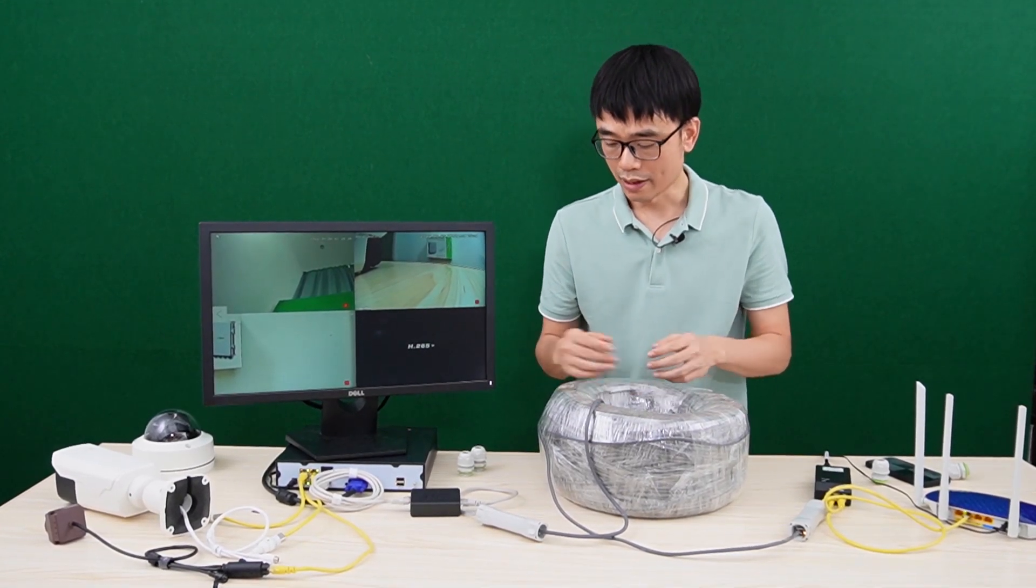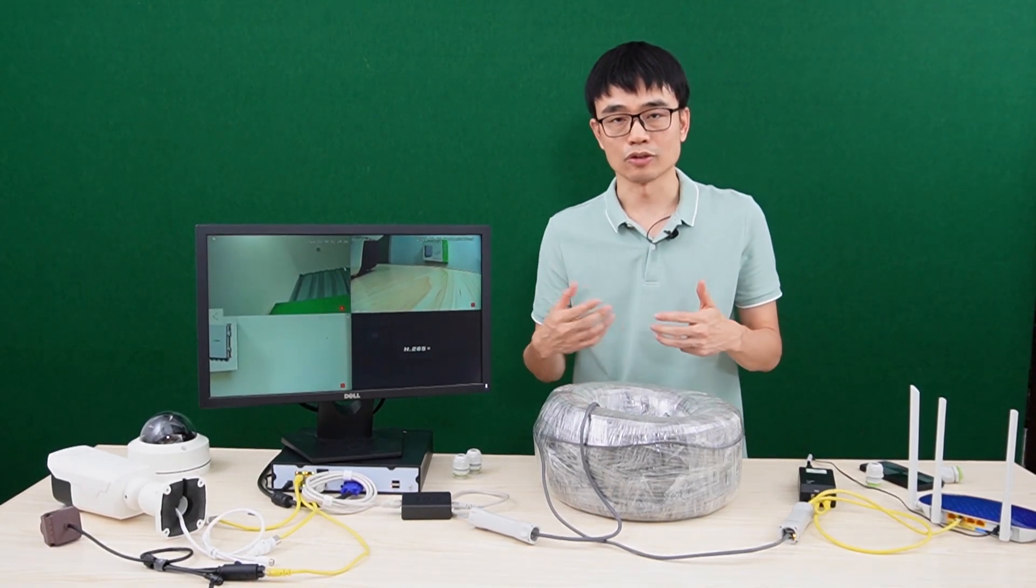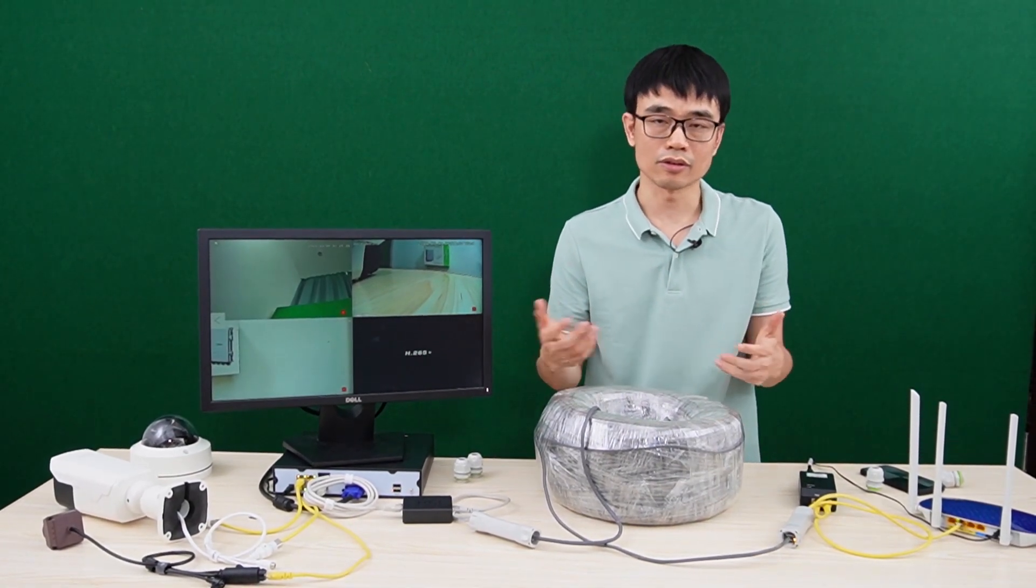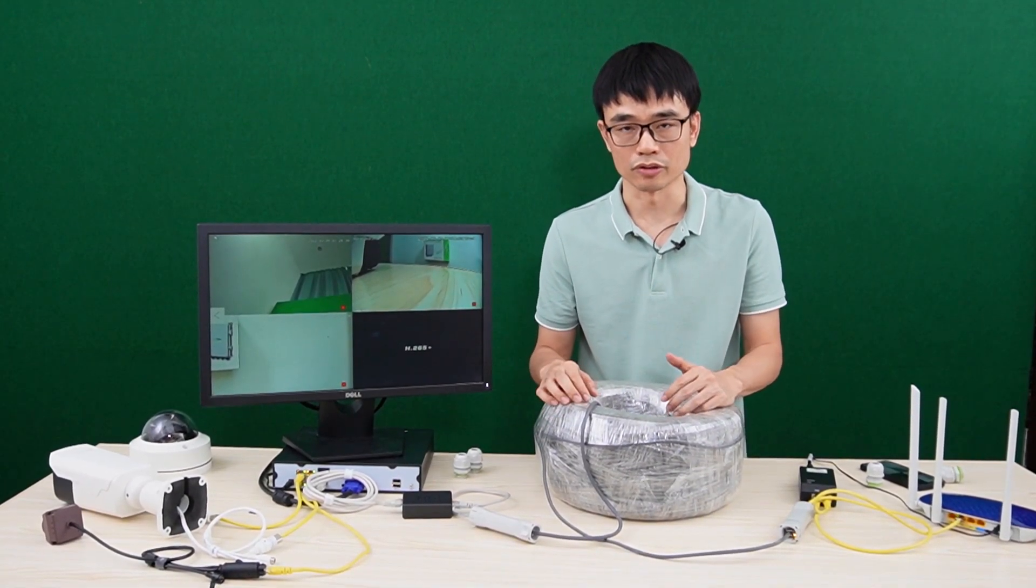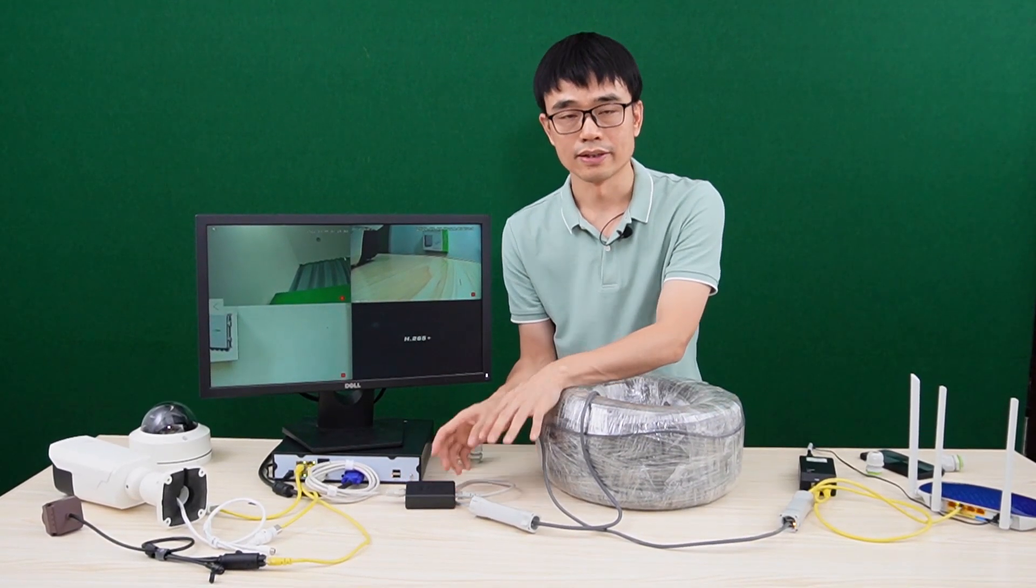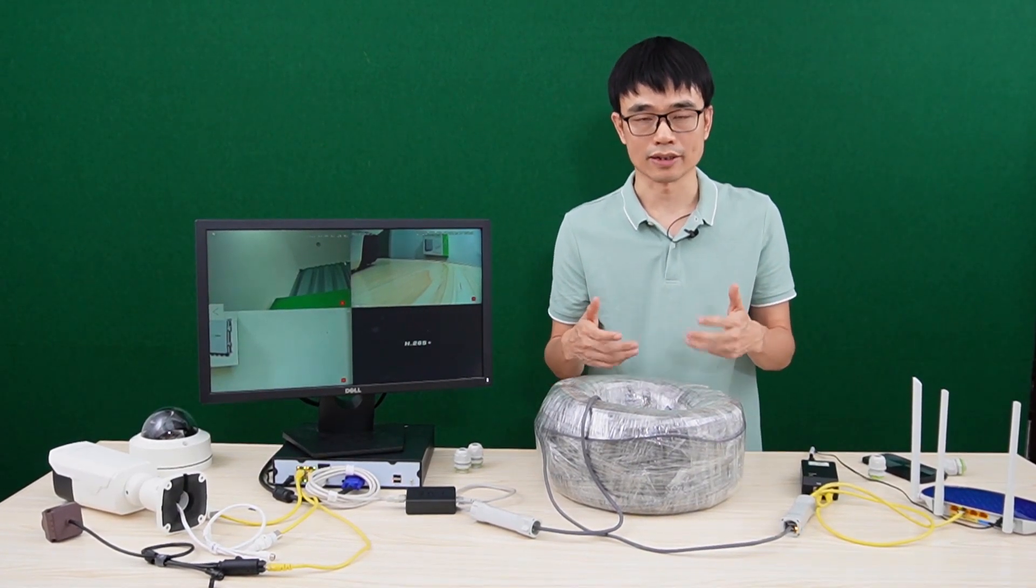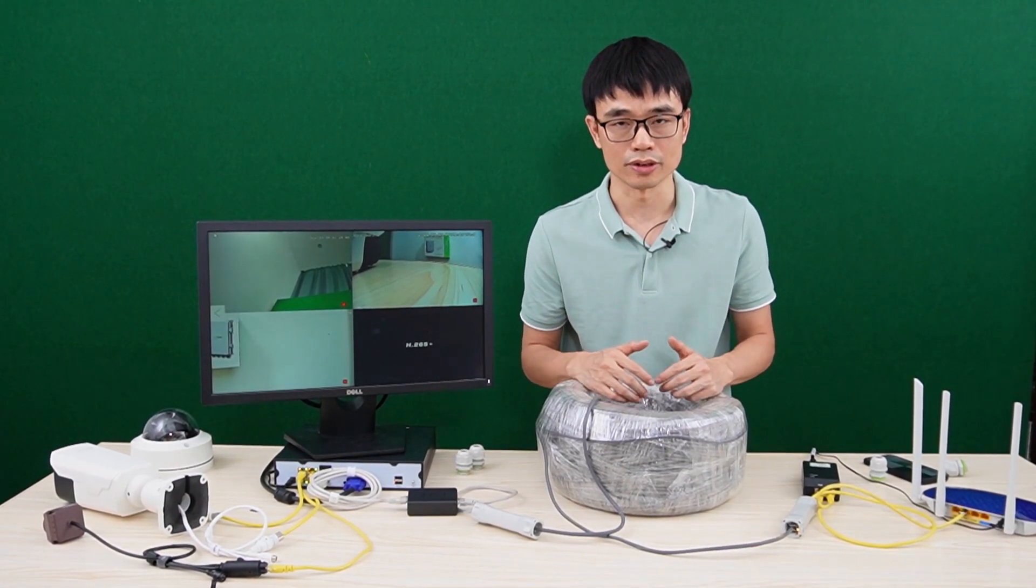If we just remove this one, the PoE injector will see there's no powered device. I mean, no other device will require the power. So it refuses to send the power. So the PoE splitter just helps to complete the power handshaking, also called power negotiation, in the standard PoE system.